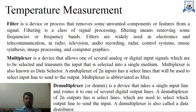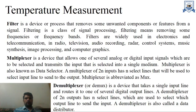Next is filter. A filter is a device or process that removes some unwanted components or features from a signal. Filtering is a class of signal processing. Filtering means removing some frequencies or frequency bands from our signal. Filters are widely used in electronics and telecommunication — in radios, television, audio recording, radar, control systems, music synthesis, and image processing.